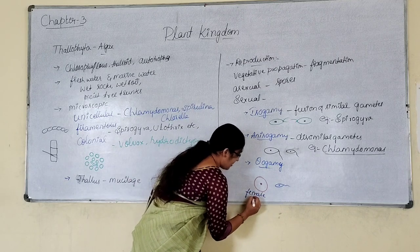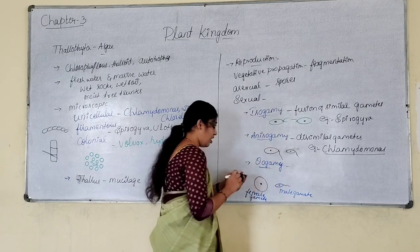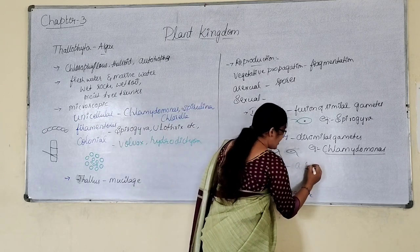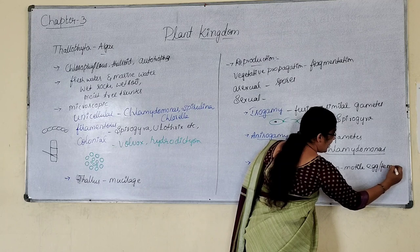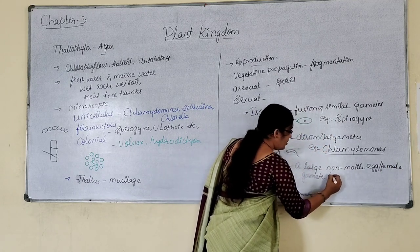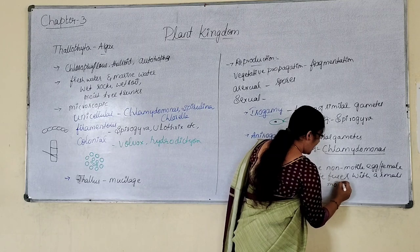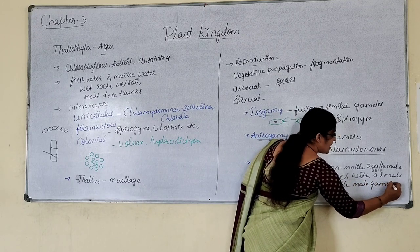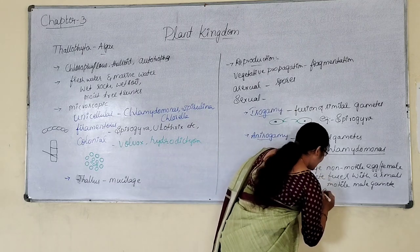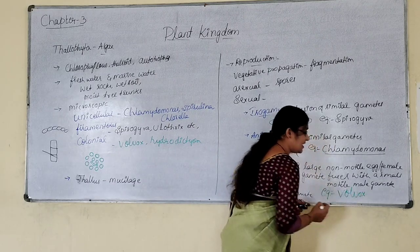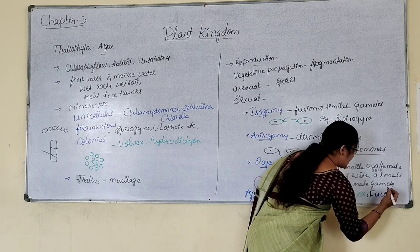In oogamy: a large non-motile female gamete fuses with a small motile male gamete. Oogamy can be seen in the case of Volvox, and it can also be seen in the case of Fucus.